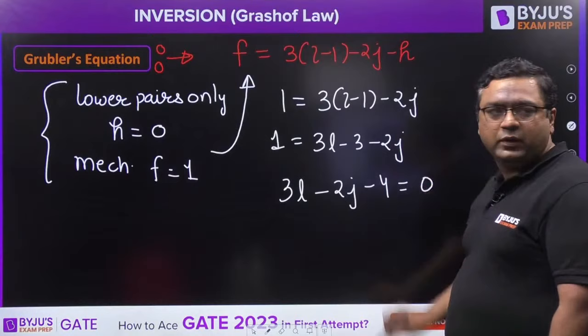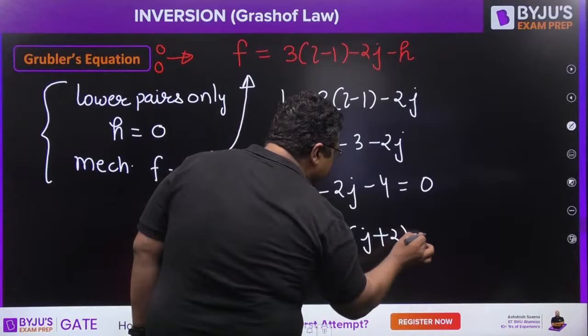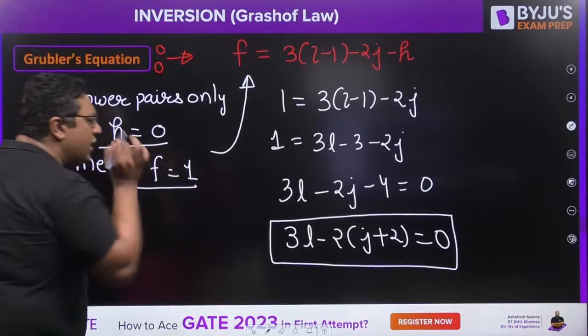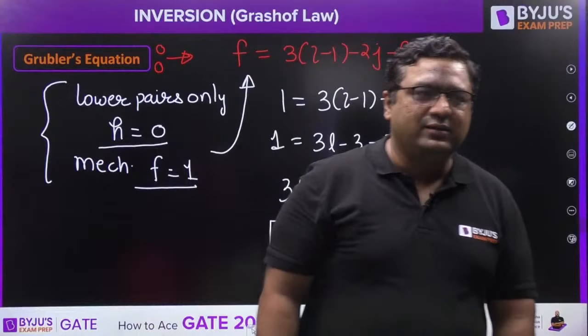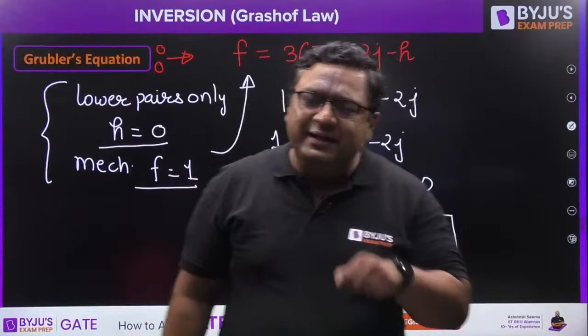Grubler substituted f=1 and h=0 into the Kurzbach equation: 1 = 3(L−1) − 2j, which gives 3L − 2j − 4 = 0, or equivalently 3L − 2(j+2) = 0. Now, the term 2(j+2) is always even because 2 is an even multiplier. Whether (j+2) is odd or even, multiplying by 2 always gives an even result — for example, 2×3=6, 2×2=4.